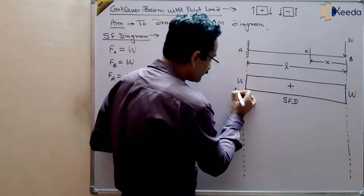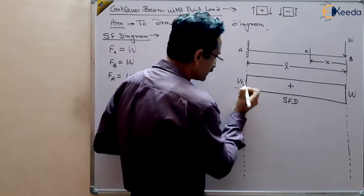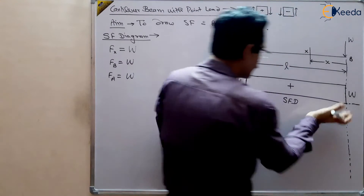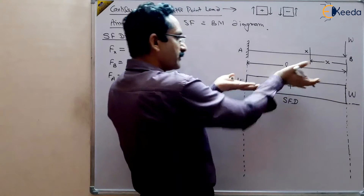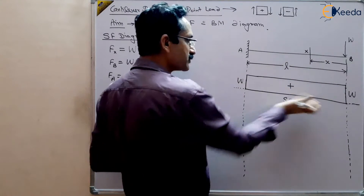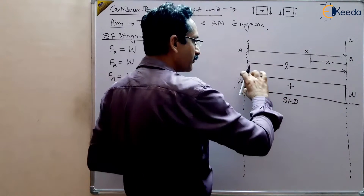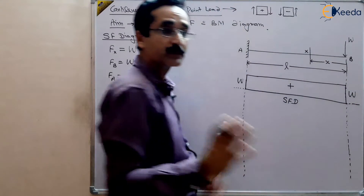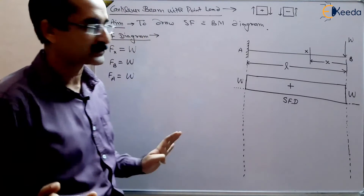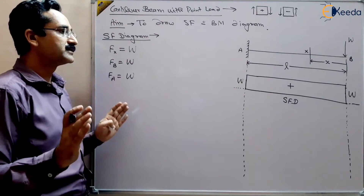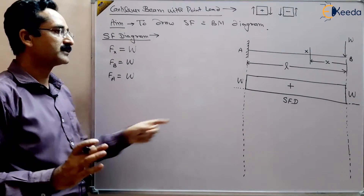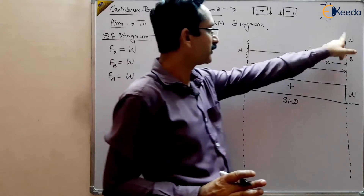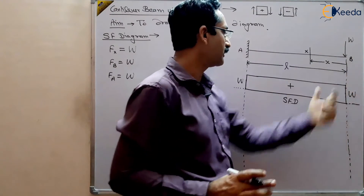At the base, it is positive upward, and the value is W. So this is the simplest case where the shear force diagram equals the weight of the applied load W, constant throughout.